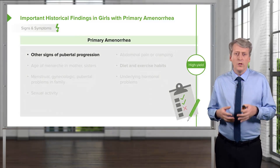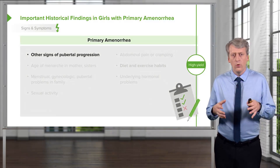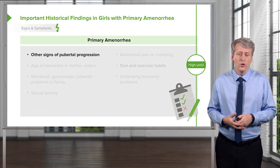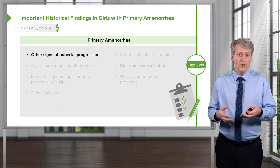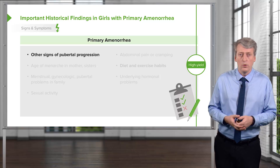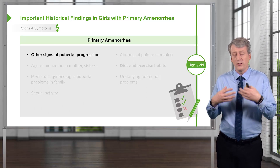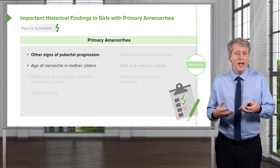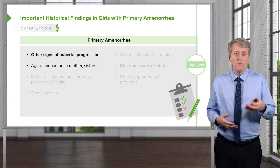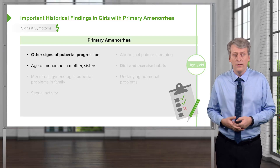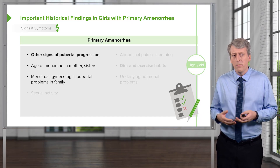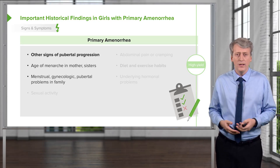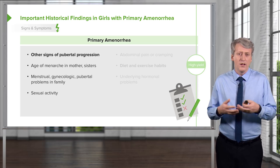When we see a patient with primary amenorrhea, it's important to ask questions about the entirety of their history and do a good physical exam. We need to investigate other signs of pubertal progression — does the patient have breast development, what Tanner stage is the child? We need to ask about the age of menarche in the mother and sisters, as a delay may run in the family, and about menstrual, gynecologic, and pubertal problems in the family. Always ask about sexual activity.